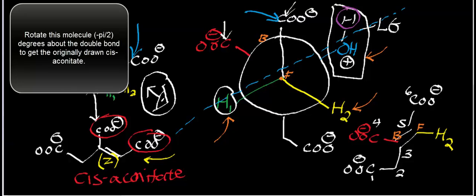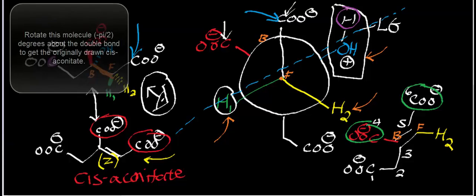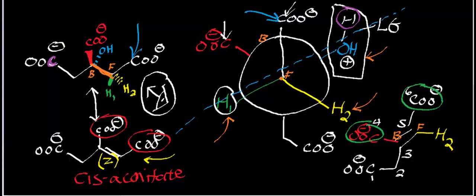This technique is what you want to use when doing beta eliminations to make sure you get the right product. Find the leaving group, find the proton that's going to be abstracted, and assuming they're anti-periplanar — meaning on opposite sides of the Newman projection — take a dotted line right through the center of both of them. On either side of that dotted line is what ends up on that side of the double bond. Basically, the dotted line represents your double bond.